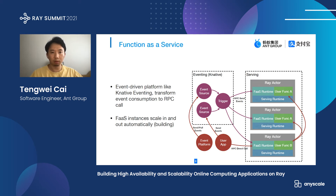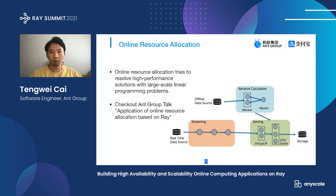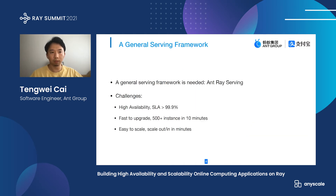Online resource allocation tries to resolve high-performance solutions with large-scale linear programming problems. It uses several different computing patterns, including serving. Please check my colleague FountainBean's talk, 'Application of Online Resource Allocation Based on Ray,' for more details. After seeing so many serving scenarios, we find a general serving framework is essential.